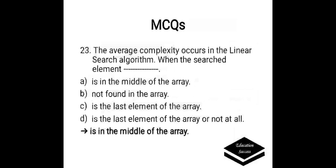The average case complexity occurs in linear search algorithm when the search element: a) is in the middle of the array, b) not found in the array, c) is the last element of the array, or d) is the last element or not in the array at all. Correct answer is c — the element is in the middle of the array. The average case complexity occurs when the search element is in the middle of the array.